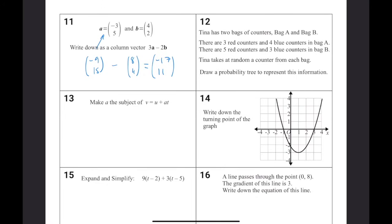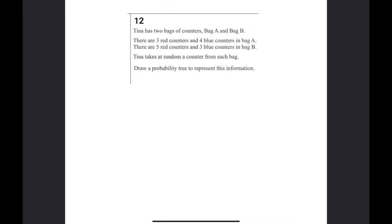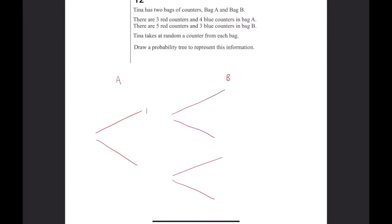Tina has two bags of counters, bag A and bag B. There are three red counters and four blue counters in bag A. There are five red counters and three blue counters in bag B. Tina takes at random a counter from each bag. Draw a probability tree diagram to represent this. Okay, so I've just put this on its own page to give us a bit more space. If you've got bag A and bag B, we want to draw it out like this. So the probability of getting a red and a blue and a red and a blue. So in the bag A, there is a 3 out of 7 chance and a 4 out of 7 chance because there's 3 red, 4 blue and 7 in total. Likewise for bag B, we're going to have 5 out of 8, 3 out of 8, 5 out of 8, 3 out of 8, and that's our final answer.